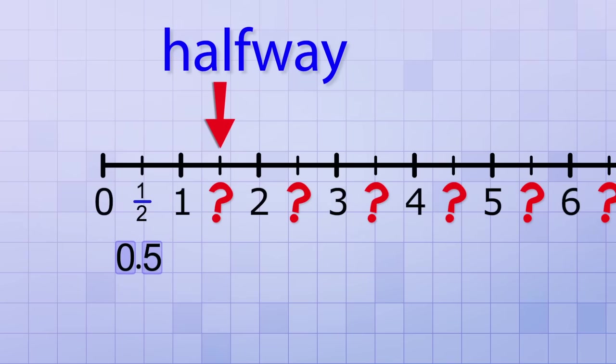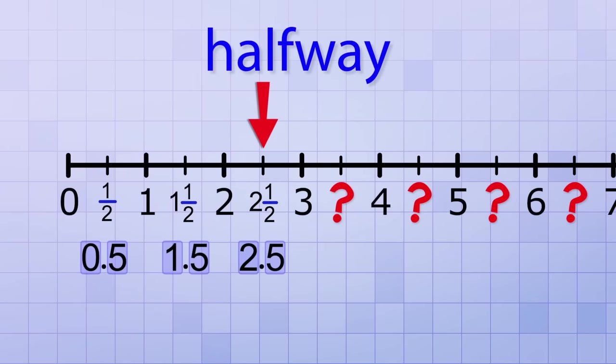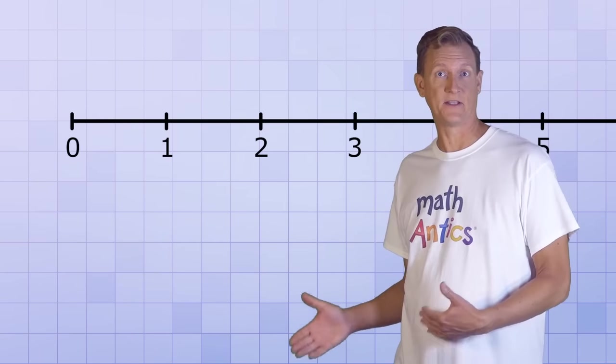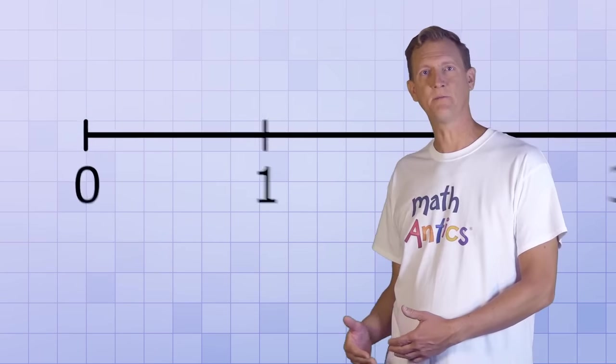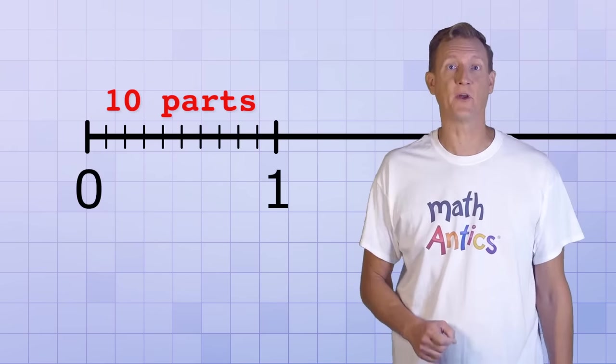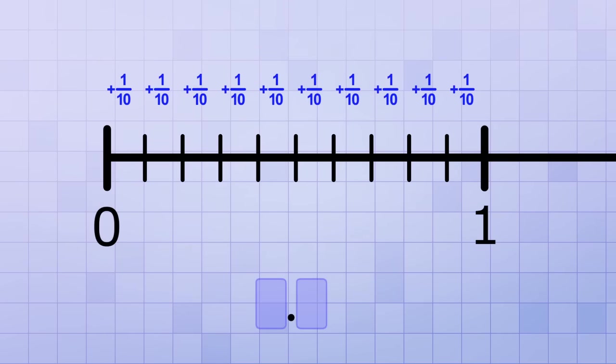The next one is a little trickier, since that mark is halfway between 1 and 2. That means that it's 1 half more than 1 and 1 half less than 2. In other words, it's the number 1 and 1 half, which has the decimal value 1.5. The next in-between mark would be 2 and 1 half or 2.5, and the next would be 3 and 1 half or 3.5. Get the idea? But there's an even more useful way to subdivide the space between each of the whole numbers. If we divide up the space between 0 and 1 into 10 equal parts, you'll see that this works perfectly with our decimal number places.